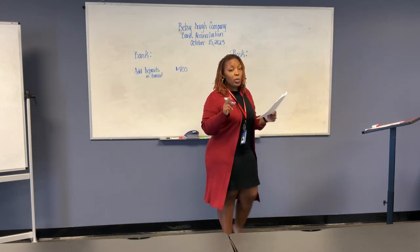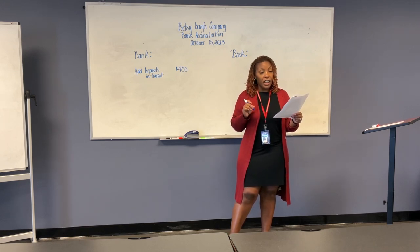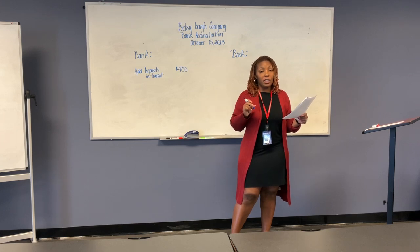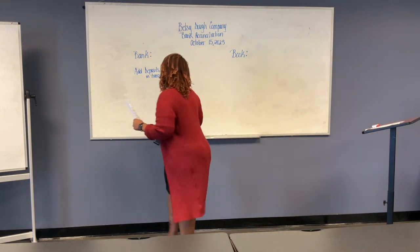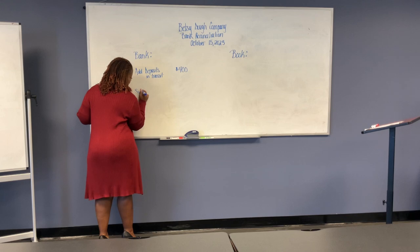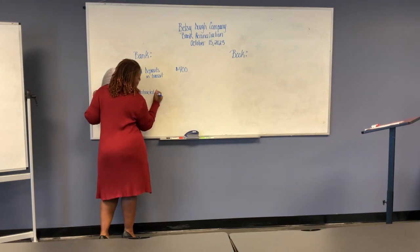Next, checks returned with the bank statement are compared to the checks written and listed in the checkbook. This comparison shows that there are checks outstanding totaling $1,456. That needs to be subtracted from the bank side because it has not cleared the bank yet. These are called outstanding checks.